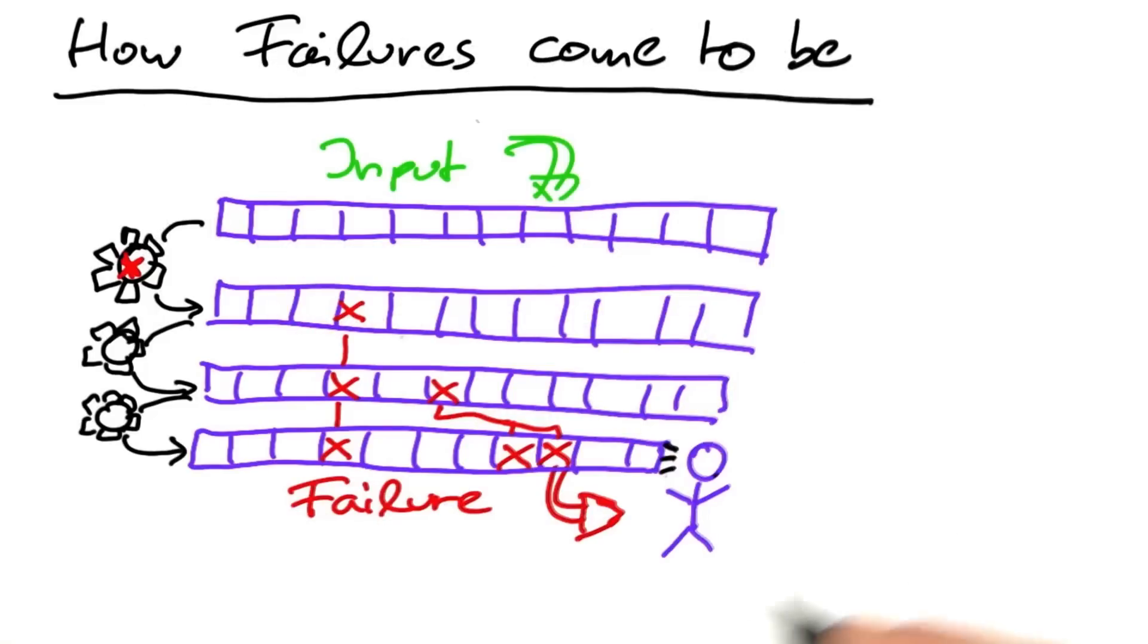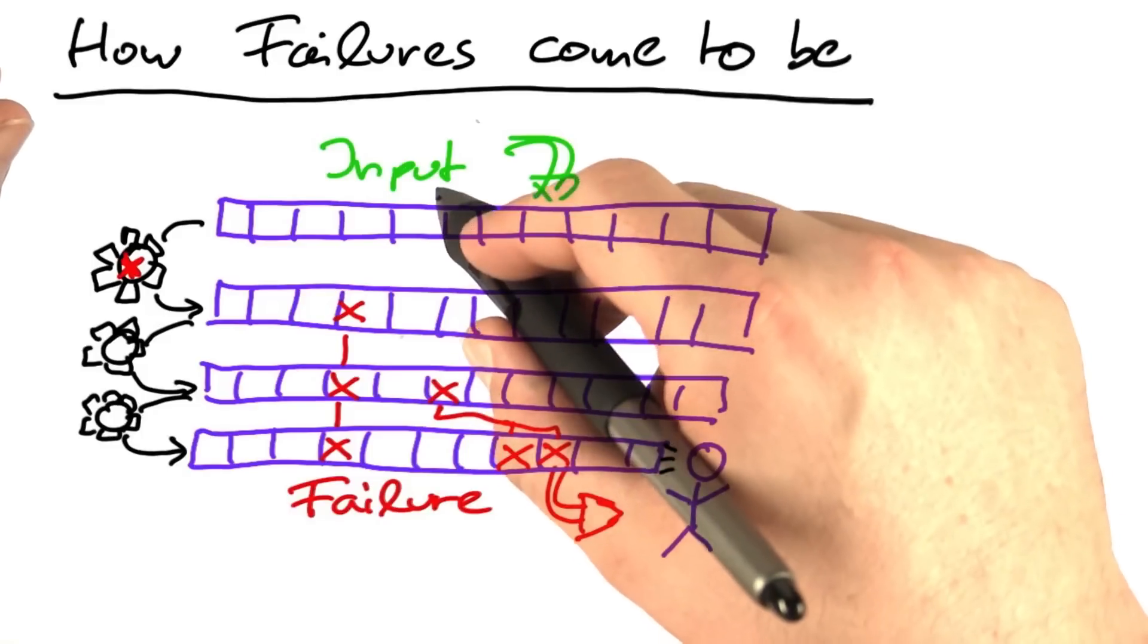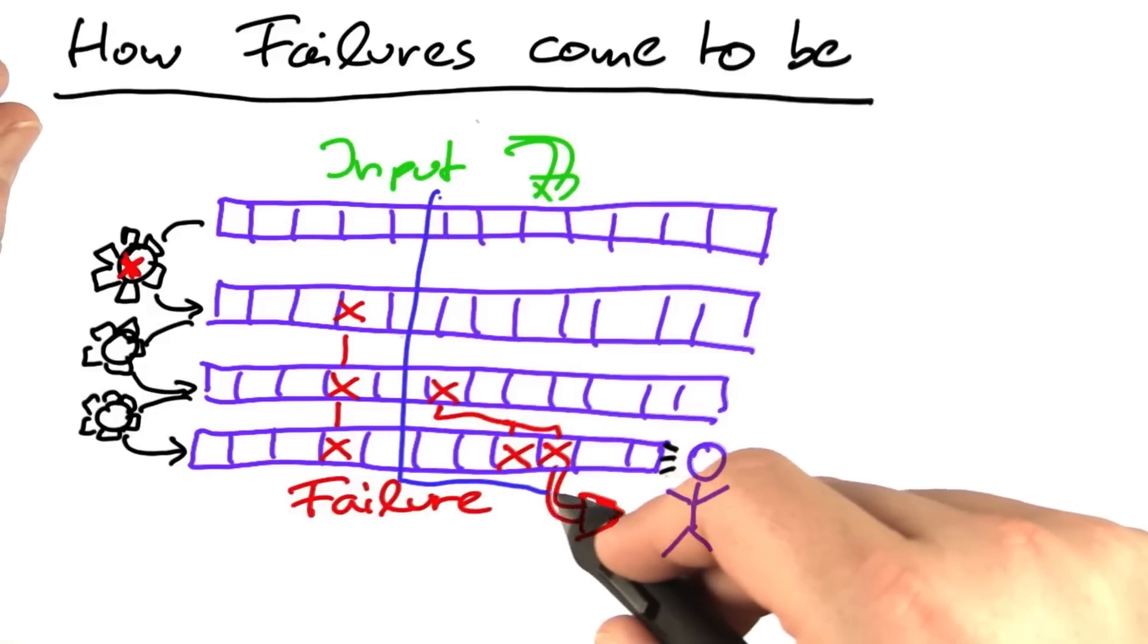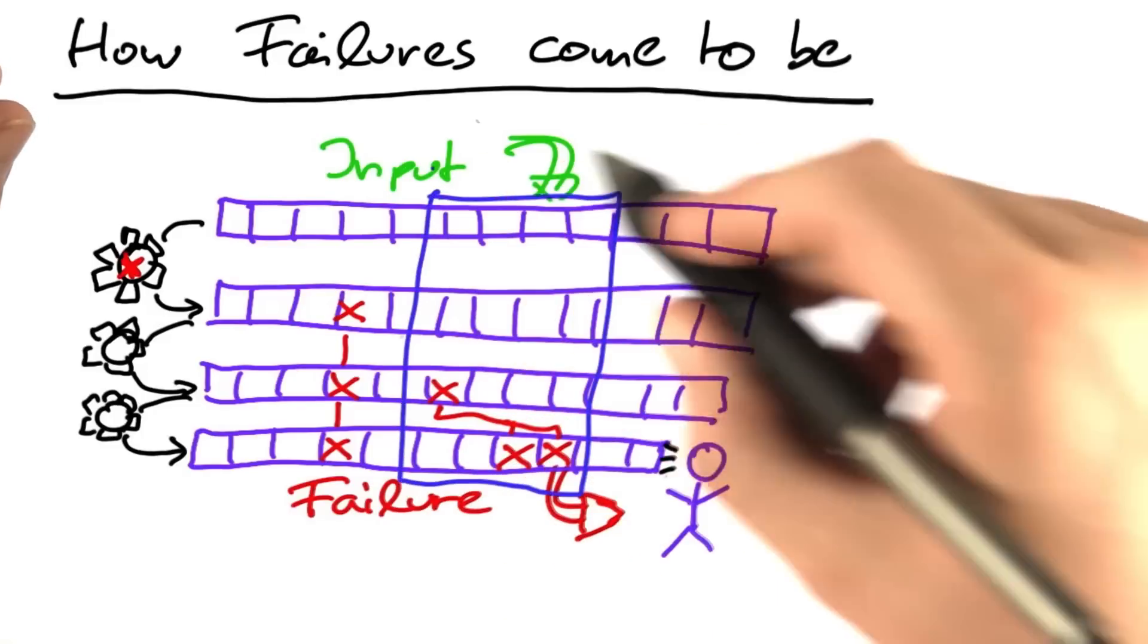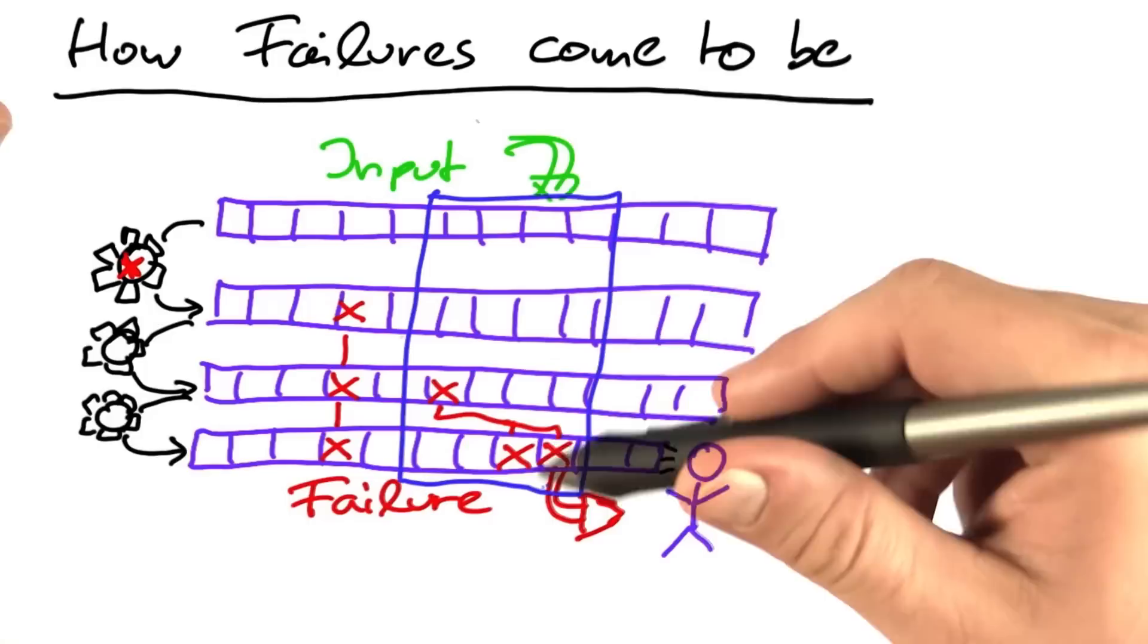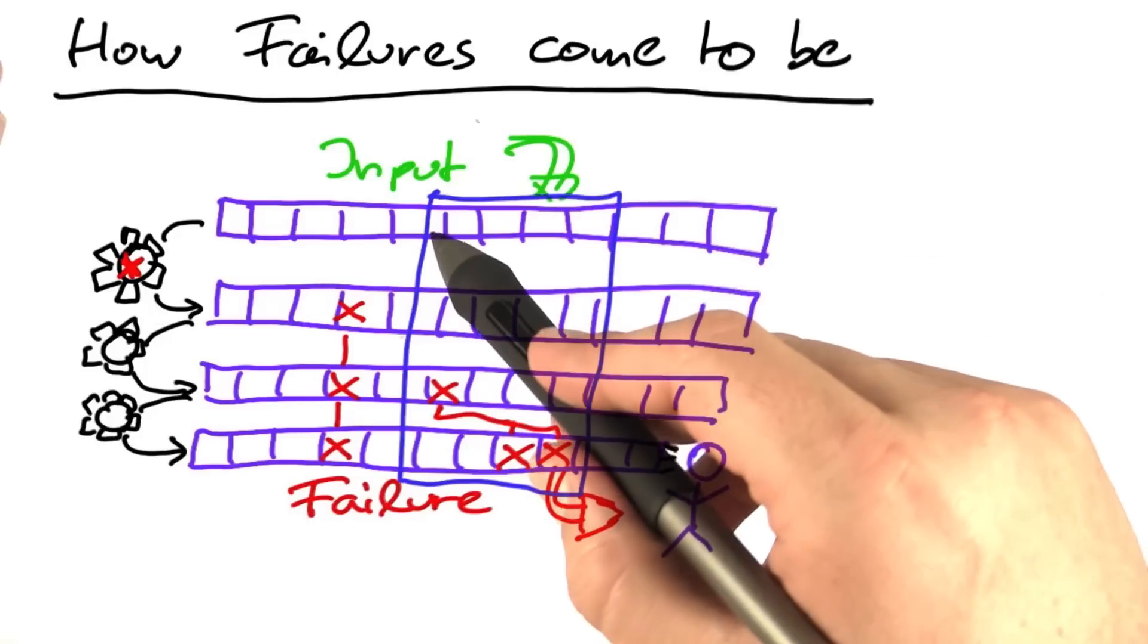If you remember our cause-effect chain as a succession of program states, where a defect introduces an infection which then propagates to become the failure, imagine what happens if you do have assertions in your code that check large parts of your state for whether they're valid or not.